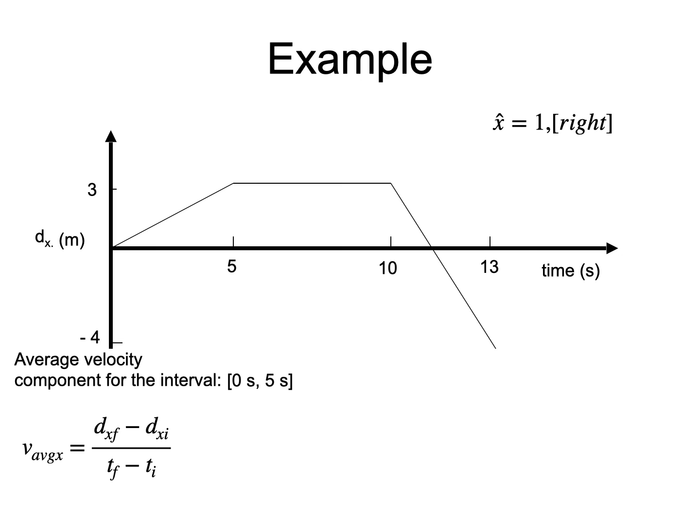Substituting that information gives this and the final answer is 0.6 meters per second. It is positive, as it should, since the slope of the line in that interval is positive.